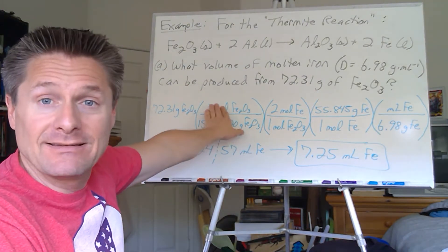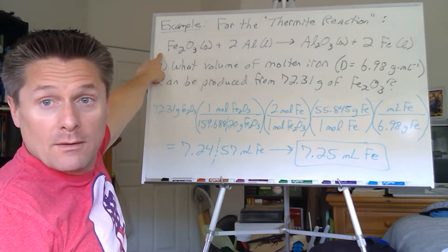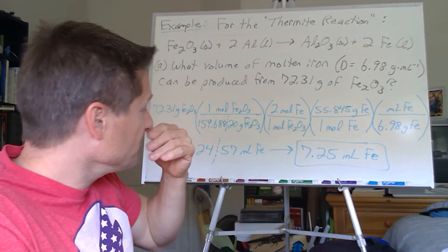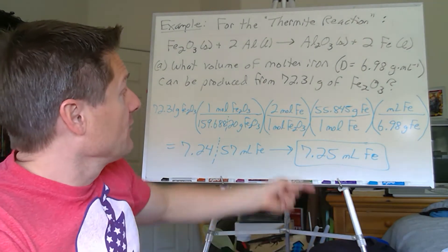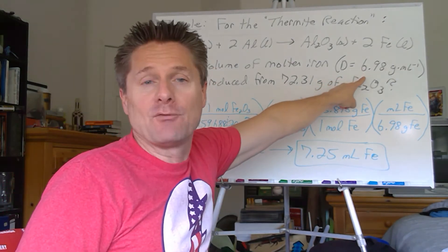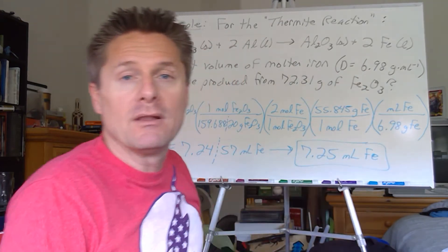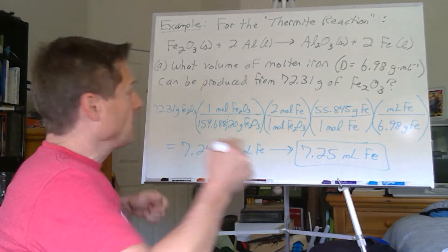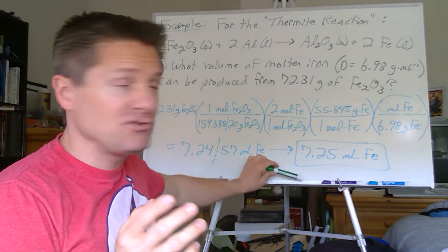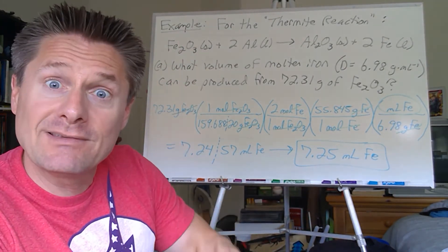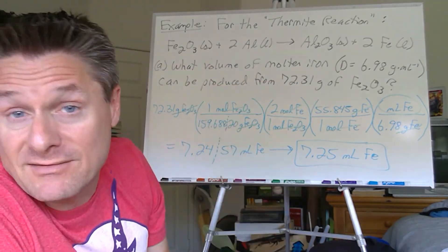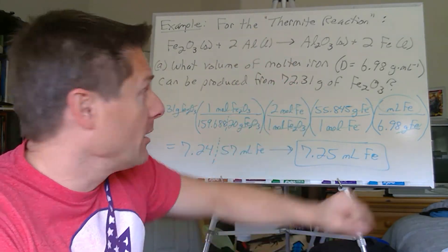Convert the grams of your reactant to moles. Then I can take my one mole of Fe2O3 and go over to the two moles of liquid iron. Once I'm in moles of my product, I get to whatever unit I'm interested in, which is milliliters. So I'm going to take the atomic mass, the 55.845 grams of iron per mole of iron, and that gives me grams. Then I can use this density that was provided, 6.98 grams of the liquid iron per milliliter of the liquid or molten iron. You can cross off your units. Grams of Fe2O3, moles of Fe2O3, moles of iron, grams of iron leaves you milliliters of iron. You can always double check yourself using a unit line equation.